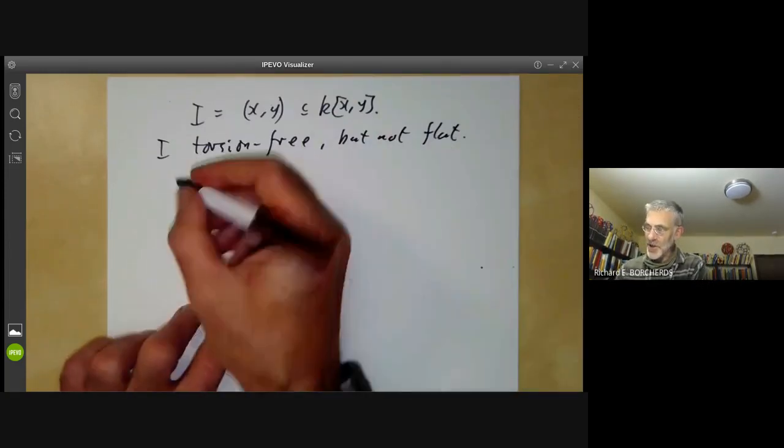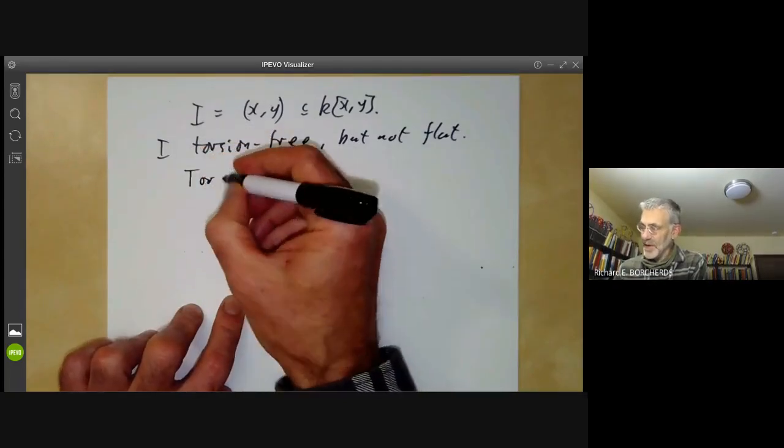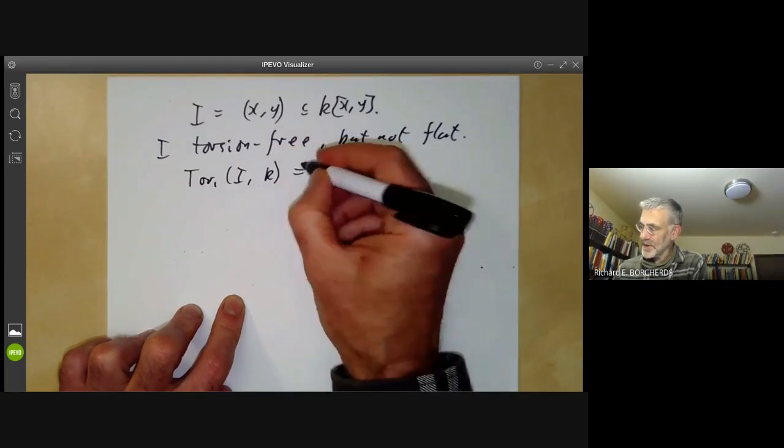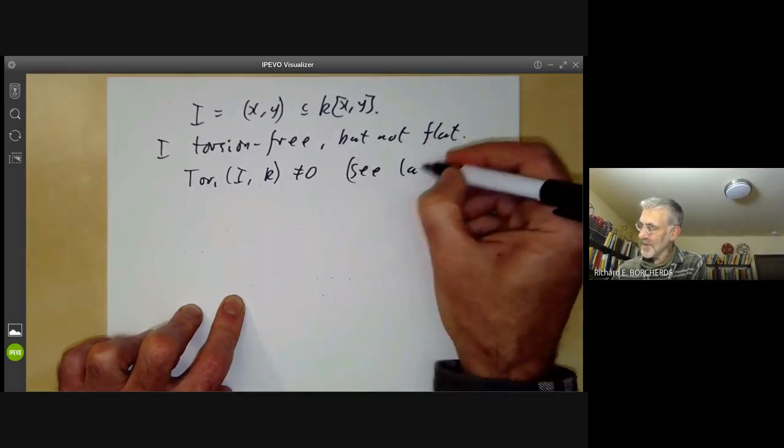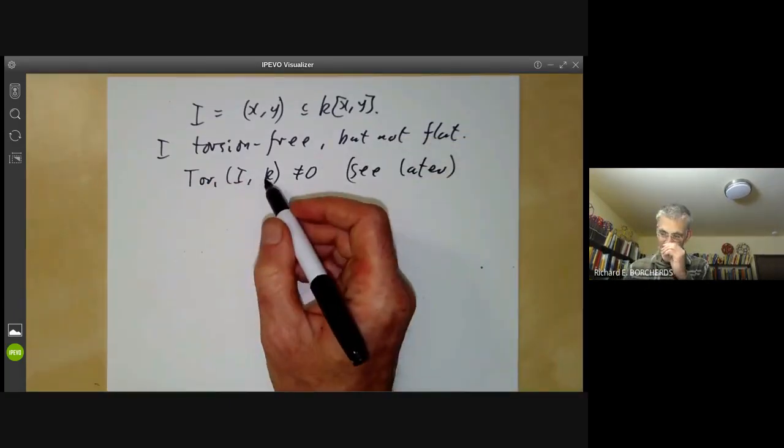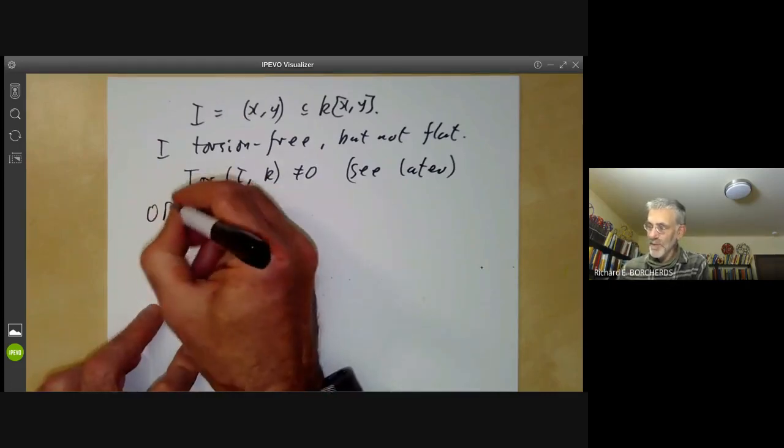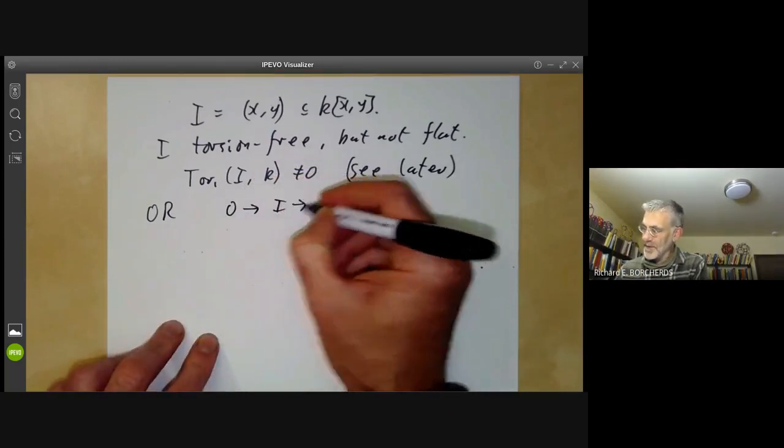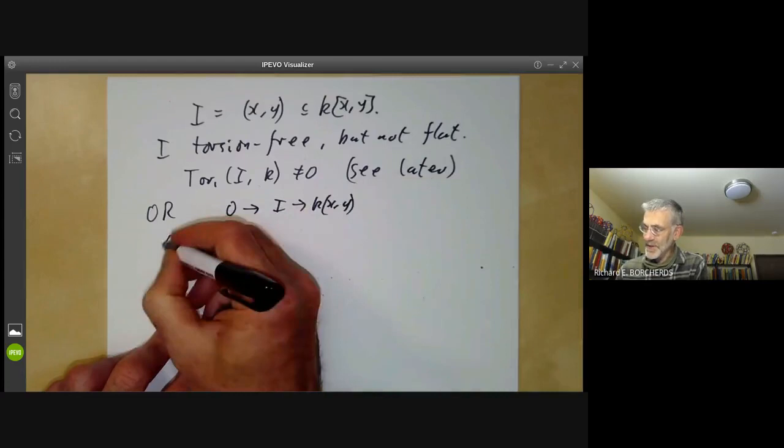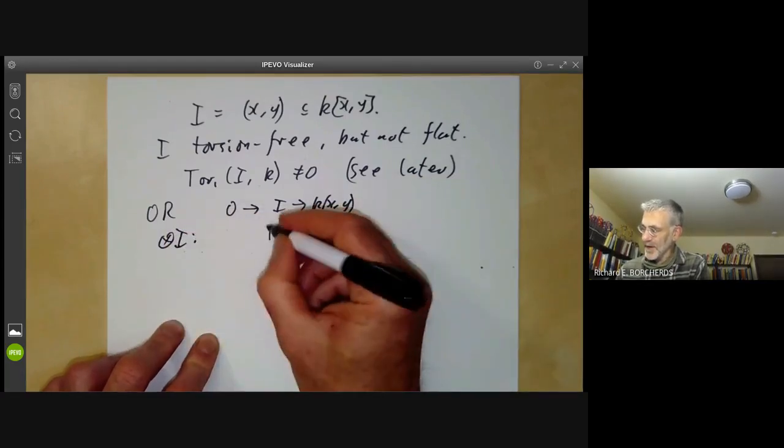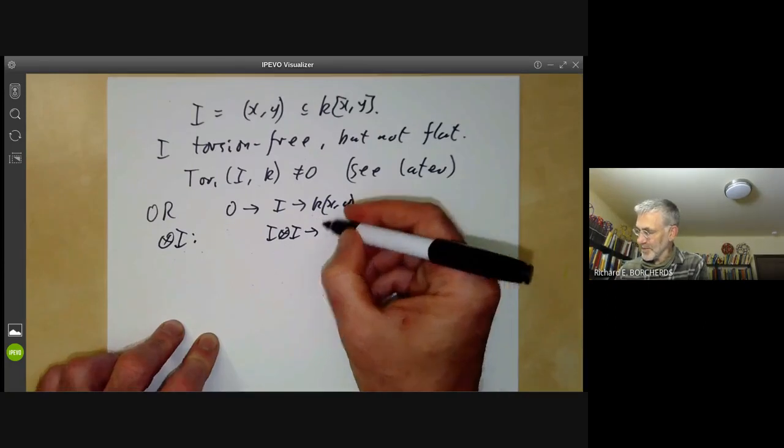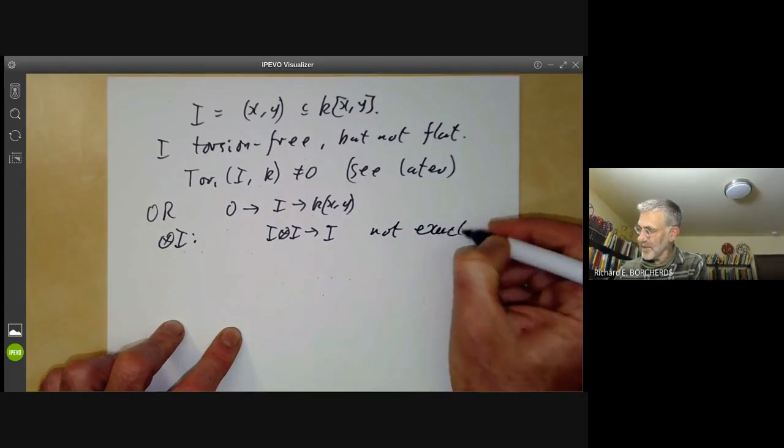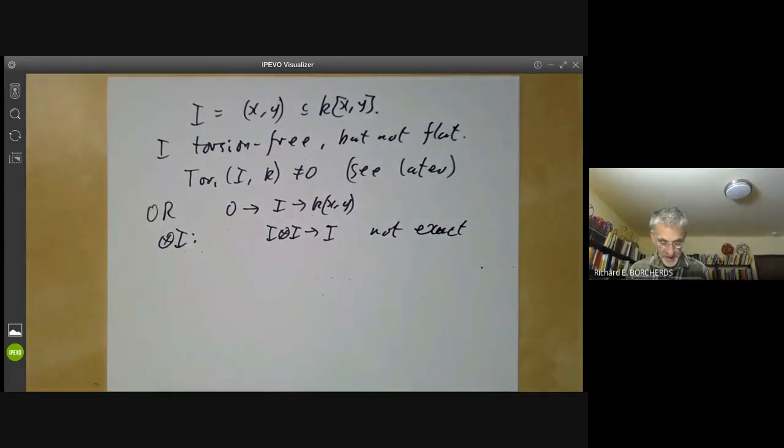It's obviously torsion-free. To see it's not flat, you can either cheat and note that Tor₁(I,K) is not zero. This is cheating a bit because we haven't actually defined Tor groups or calculated them, but in a few lectures time we'll be checking this. Or you can just check directly that if you take the exact sequence 0 → I → K[X,Y] and you tensor it with I, this I⊗I → I is not exact. But to do this, you have to calculate I⊗I, which I'm feeling too lazy to do just at the moment.